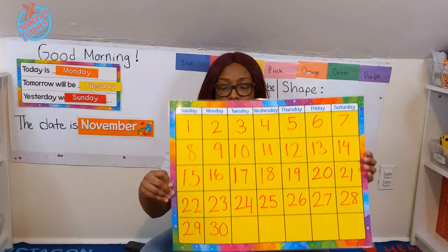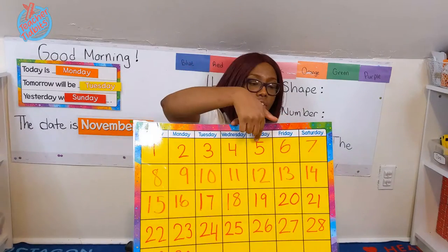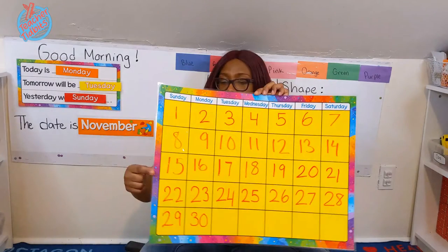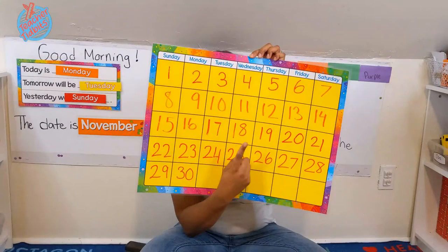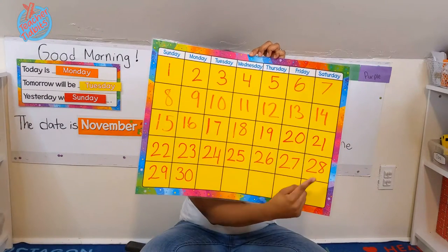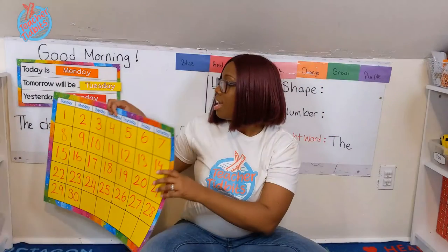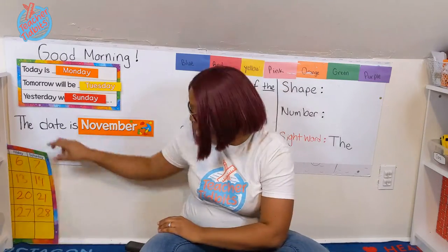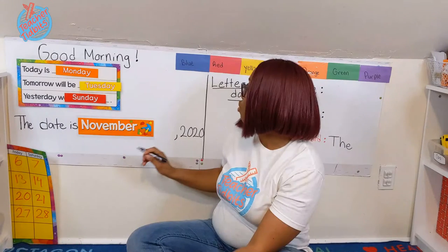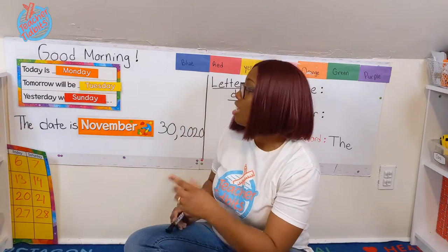Let's count to see what day it is on the calendar. 1, 2, 3, 4, 5, 6, 7, 8, 9, 10, 11, 12, 13, 14, 15, 16, 17, 18, 19, 20, 21, 22, 23, 24, 25, 26, 27, 28, 29, 30. That's a big number. It is Monday, November 30th. Let's write that on the board. The date is November 30th, 2020. That's our year. Good job.